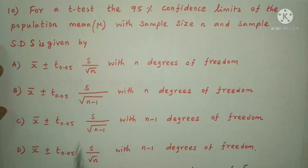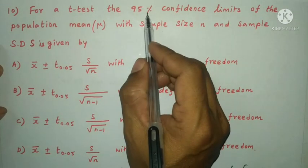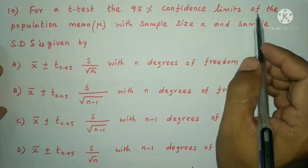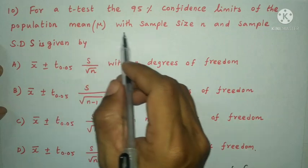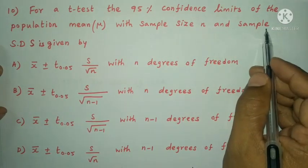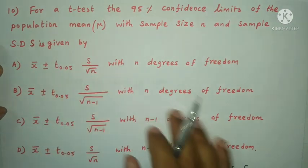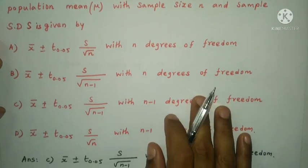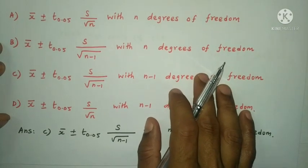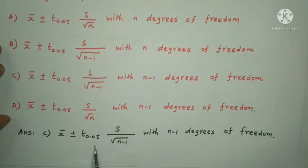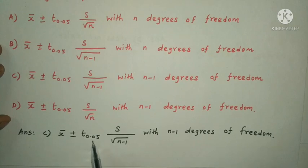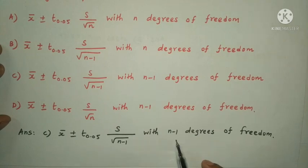Next question: for a t-test, the 95% confidence limits of the population mean mu with sample size n and sample standard deviation s is given by option C: x̄ ± t₀.₀₅ · s/√(n-1) with n-1 degrees of freedom.